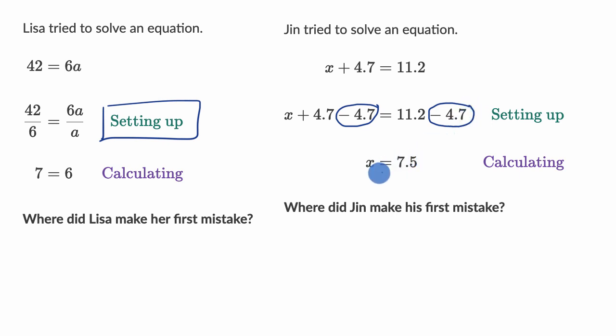And then over here on the left-hand side, these two would cancel, so you'd be left with just an X. And let's see, 11.2 minus 4.7. 11.2 minus 4 would be 7.2, and then minus the 0.7 would be 6.5. So this is where Jin made his mistake on the calculating part.